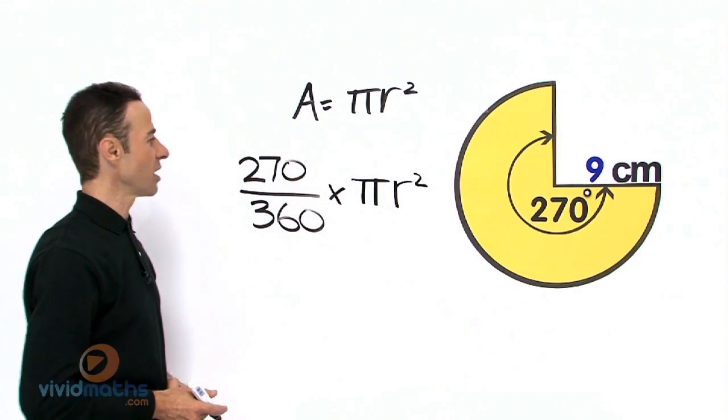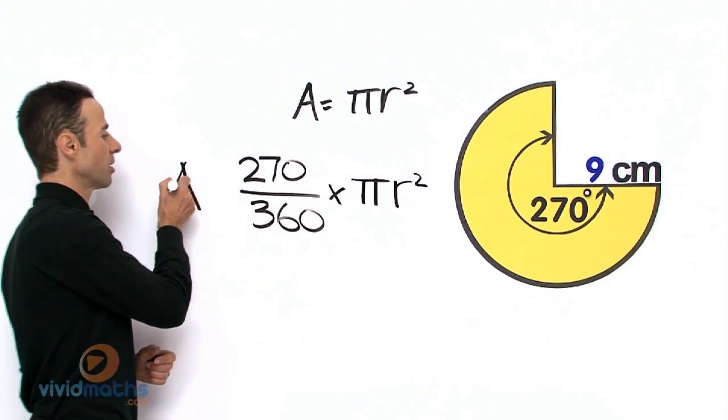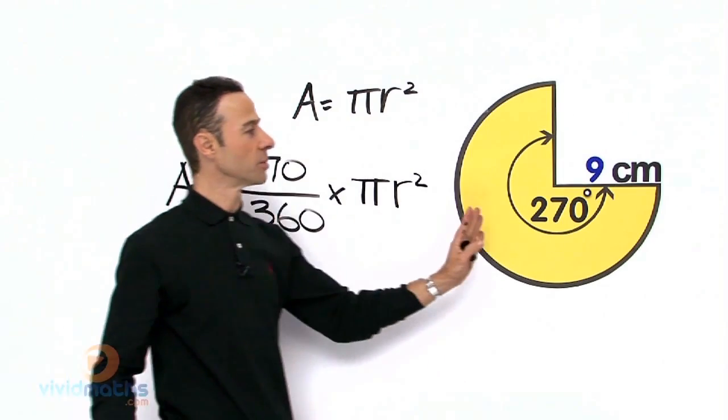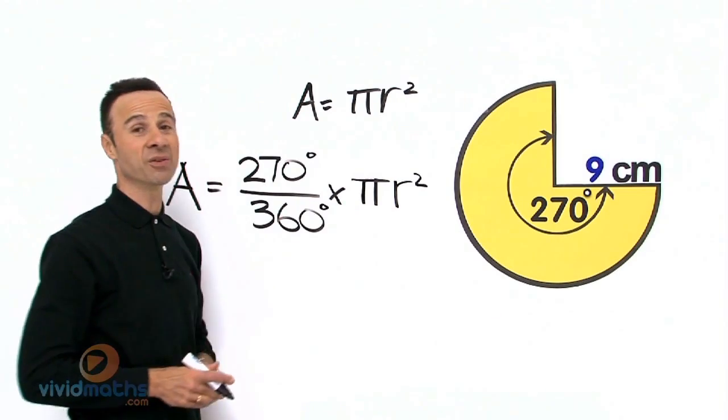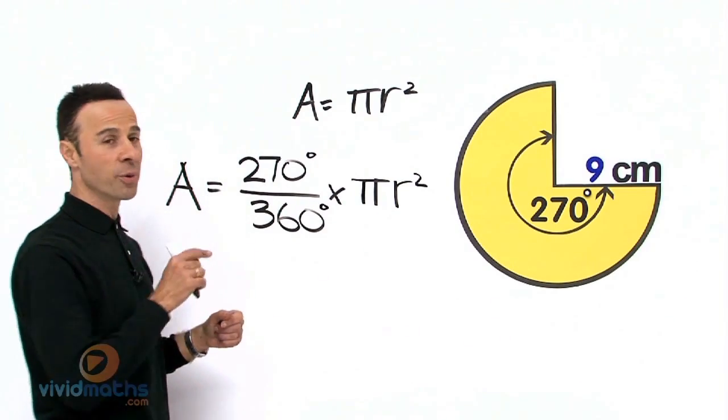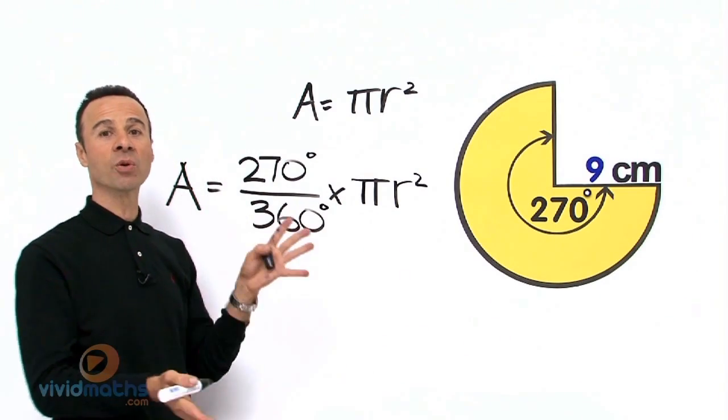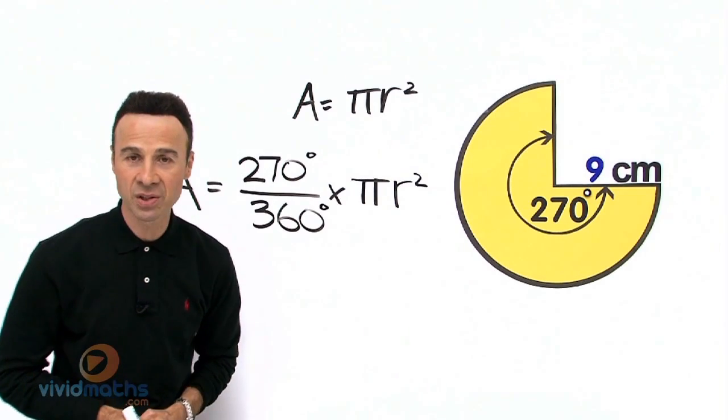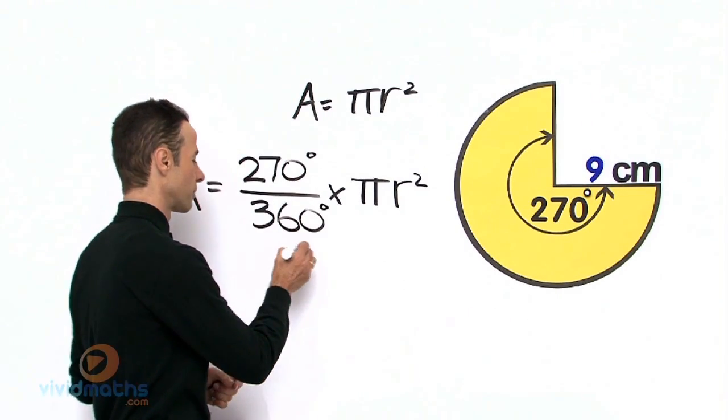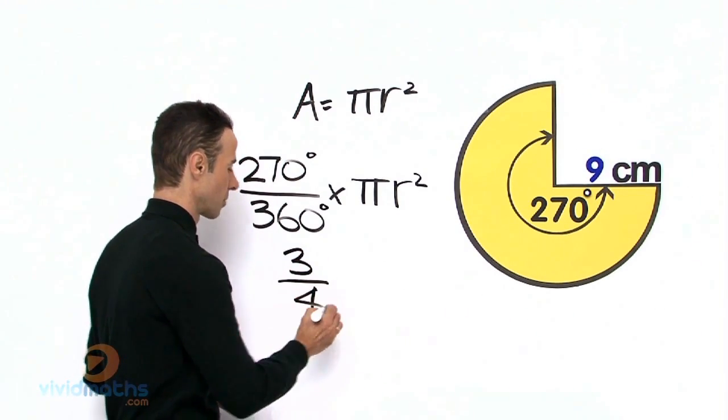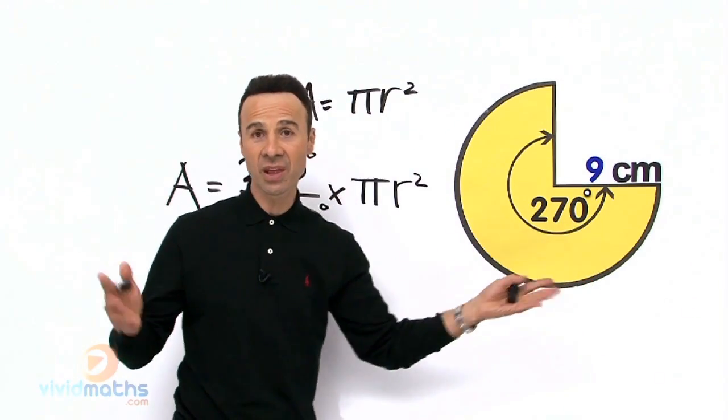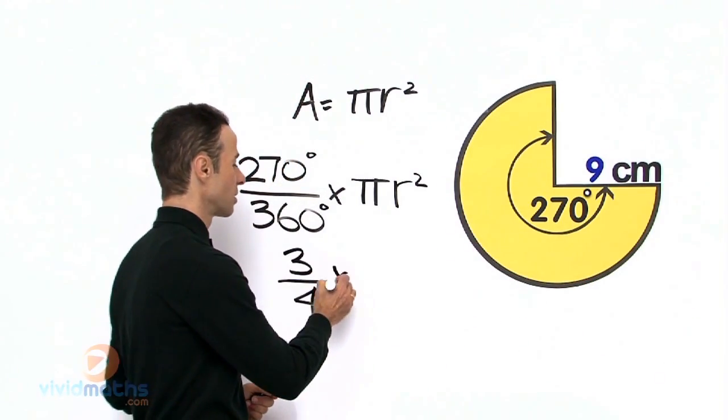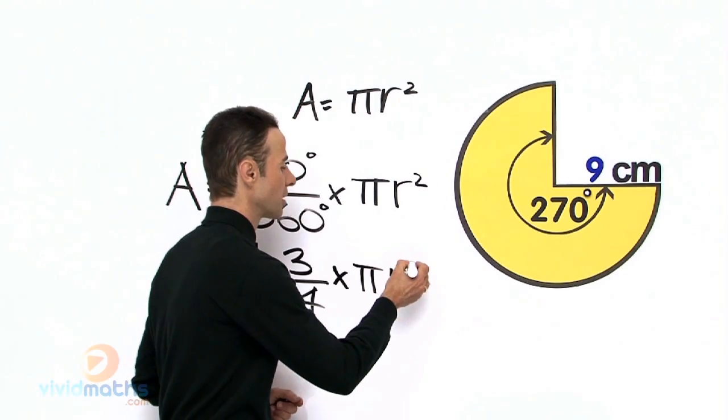Now let's simplify the 270 degrees over the 360 degrees. Well, if we do a bit of calculating, it simplifies down to a very basic fraction, and that is 3/4. It actually looks like 3/4, doesn't it? We can see that already. Times πr².